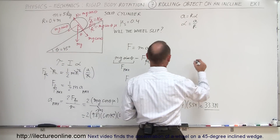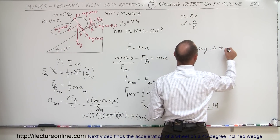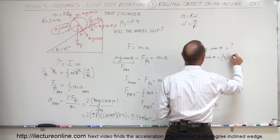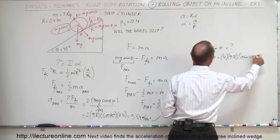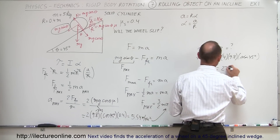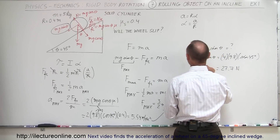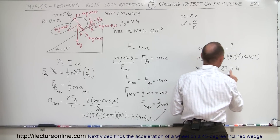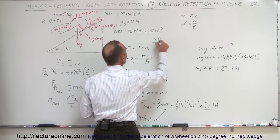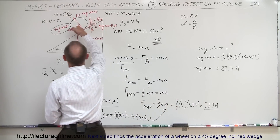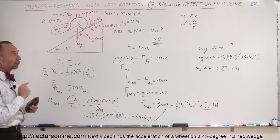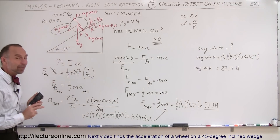Calculating mg sine theta: 4 × 9.8 × sin(45°) = 27.7 newtons. Since 27.7 newtons is smaller than the maximum force of 33.3 newtons, we conclude the wheel will not slip. The force causing the acceleration is smaller than the maximum force that can be applied before slipping begins, so the answer is: the wheel will not slip.